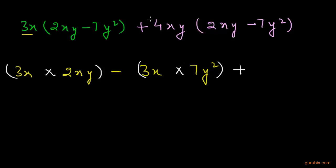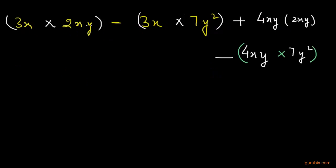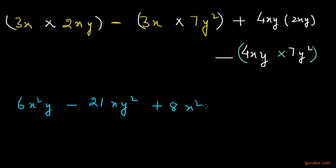Now we multiply 4xy with 2xy, and then multiply 4xy with 7y². Multiplying 3x with 2xy gives 6x²y, and multiplying 4xy with 2xy gives 8x²y², and multiplying 4xy with 7y² gives 28xy³. This is how we multiply monomials with monomials, binomials with binomials, and monomials with binomials.